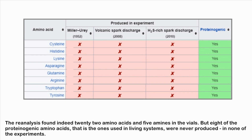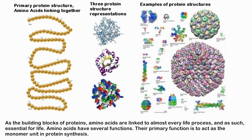The reanalysis found 22 amino acids and five amines in the vials. However, eight of the proteinogenic amino acids — the ones used in living systems — were never produced in any of the experiments. As the building blocks of proteins, amino acids are linked to almost every life process and are essential for life, with their primary function being to act as monomer units in protein synthesis.